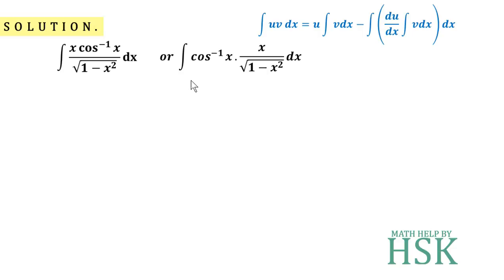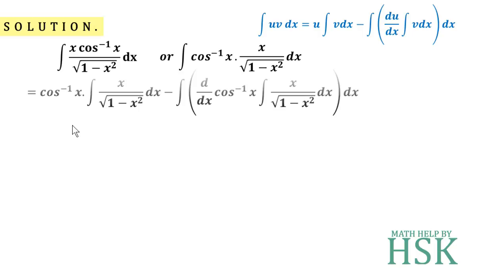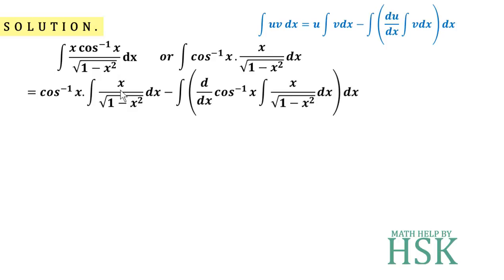On applying the formula of integration by parts, I get: cos⁻¹(x) times the integration of x over √(1-x²) — that is, the first function times the integration of the second function — minus the differentiation of the first function times the integration of the second function, which is the integration of x over √(1-x²), and further the integration of that product. Since x over √(1-x²) is not a function we can integrate directly, I'm going to take this integral separately and solve it.